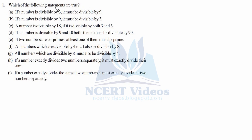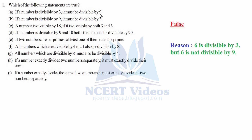Question 1: Which of the following statements are true? Statement A: if a number is divisible by three, it must be divisible by nine. This is false. The reason is six is divisible by three but six is not divisible by nine, so A is false.